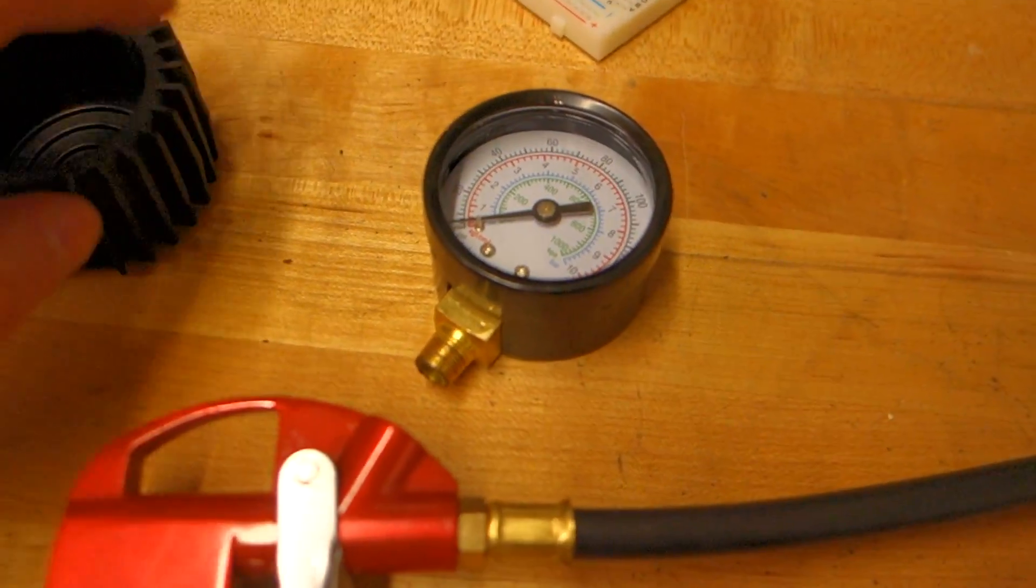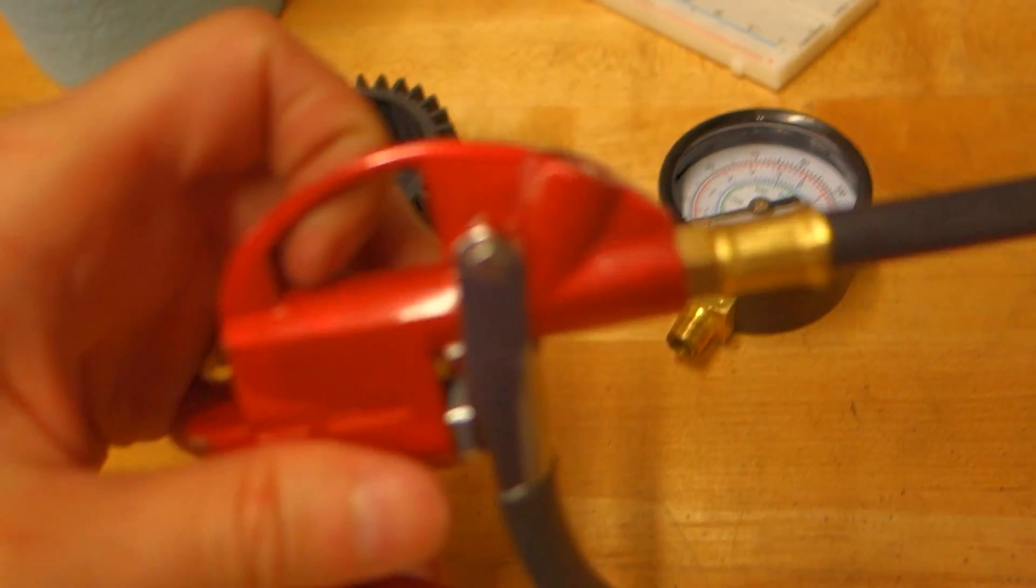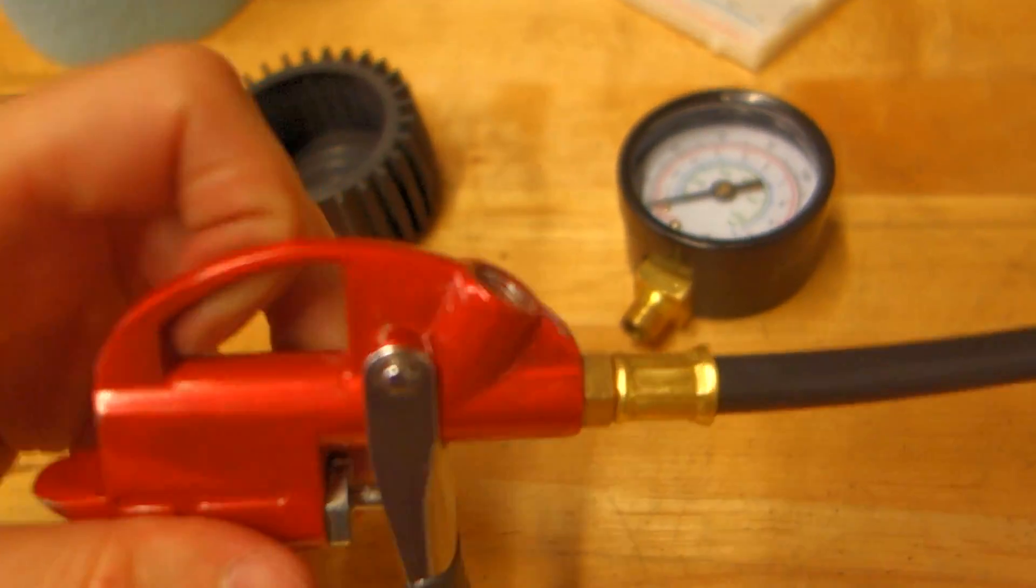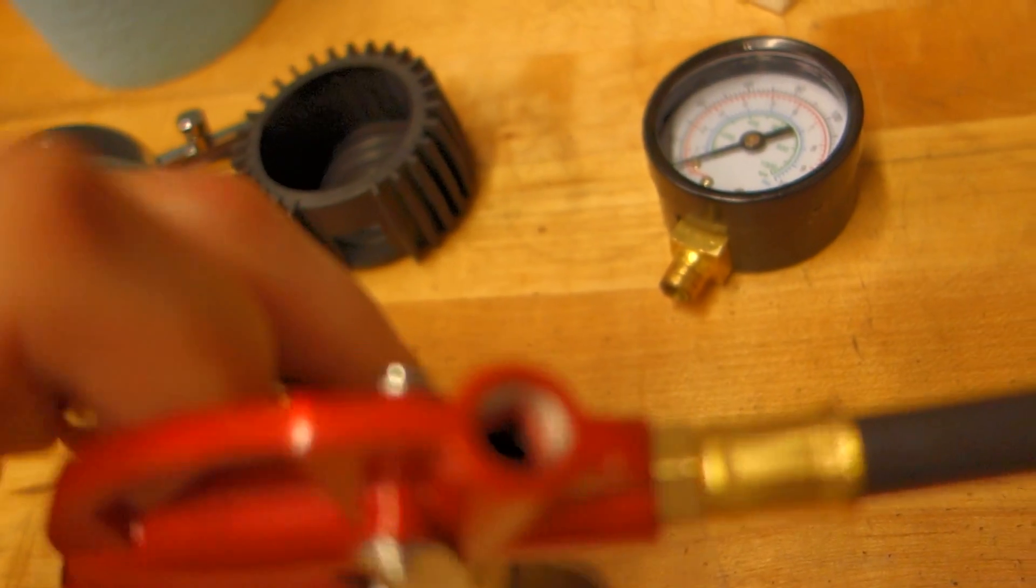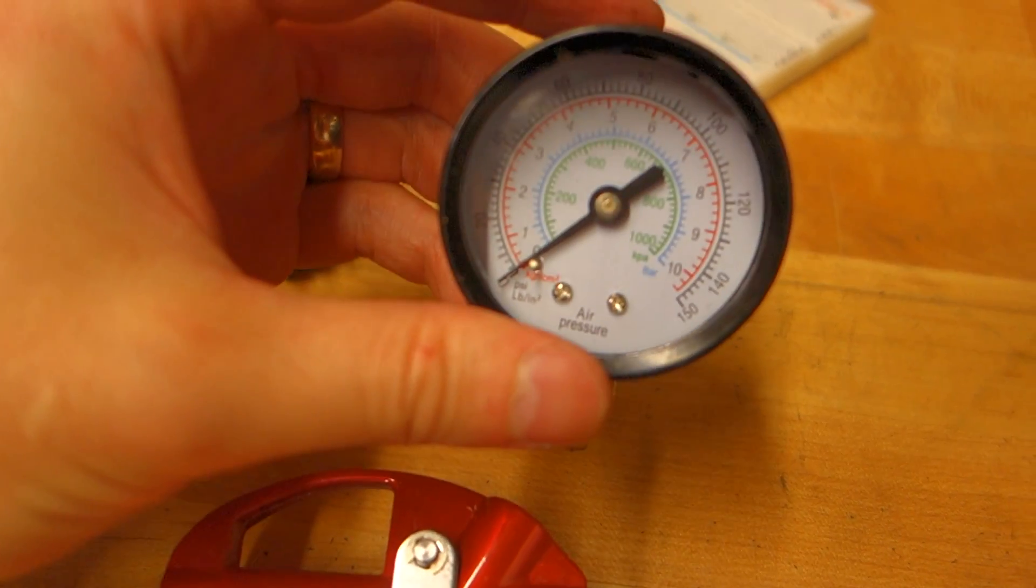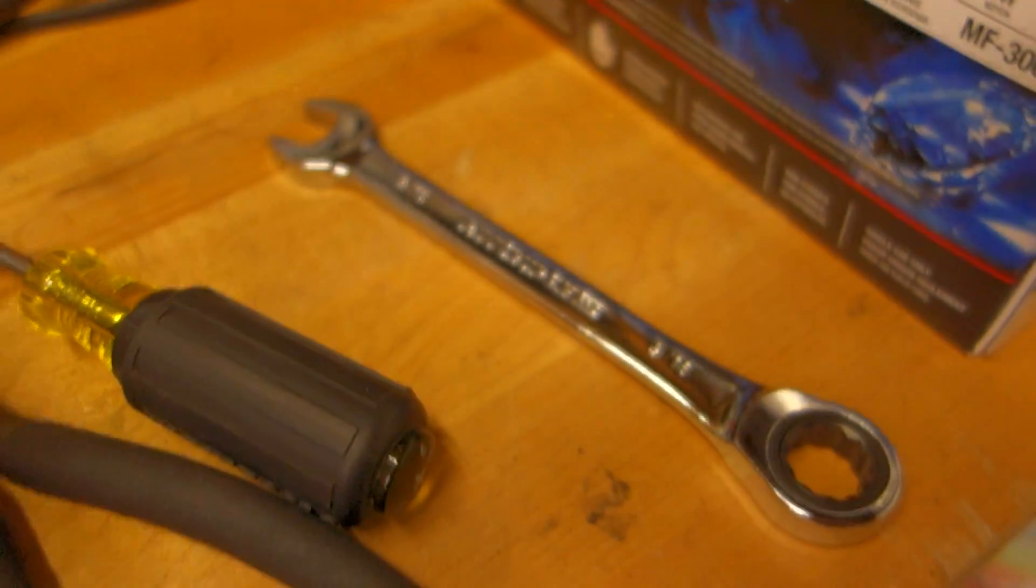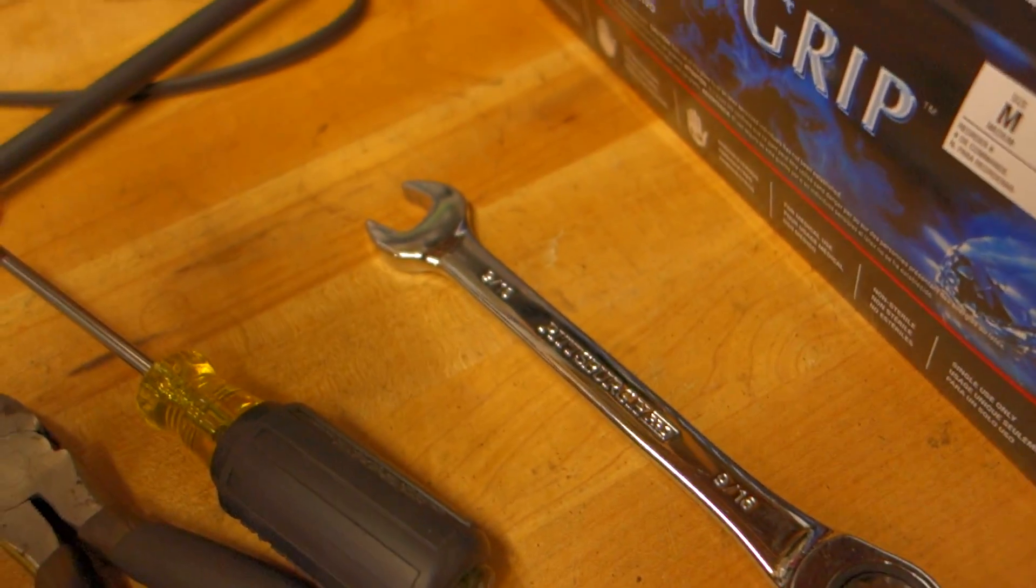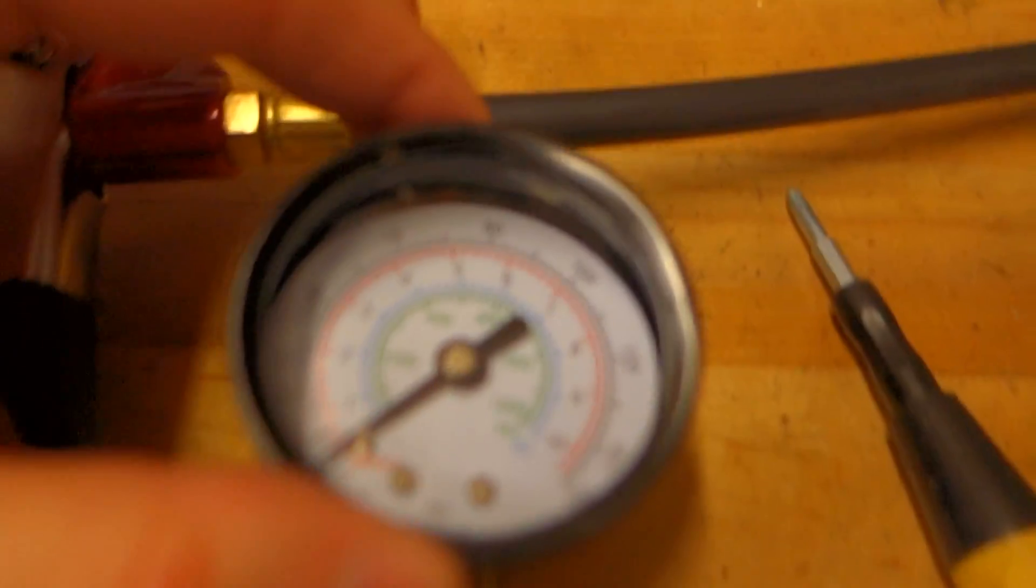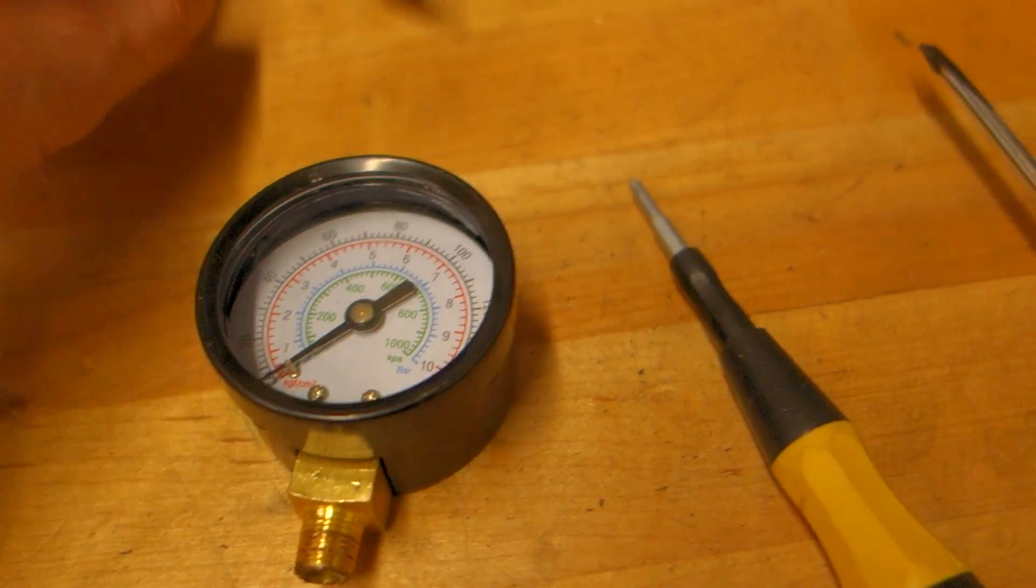As you can see the little air gun has a threaded fitting that the gauge fits into. You unscrew that with a 9/16th wrench and then your gauge is in your hand ready to take apart.